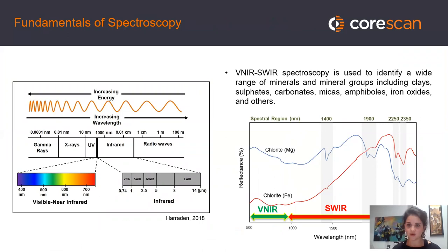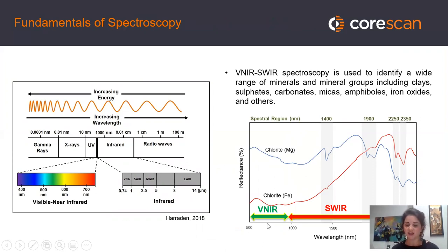Fundamentally, what are spectroscopists doing and how is our technology working? We're using a portion of the electromagnetic spectrum — the visible near-infrared through the shortwave infrared when we're talking about CoreScan. Looking at these regions, we're able to identify mineral groups such as clays, sulfates, carbonates, micas, amphiboles, iron oxides, and a whole slew of others.